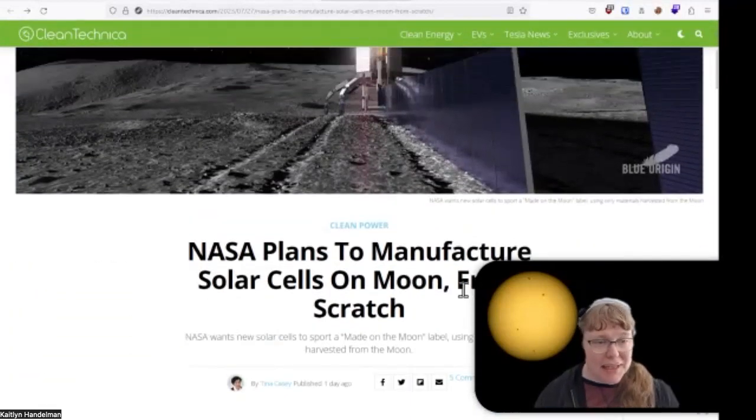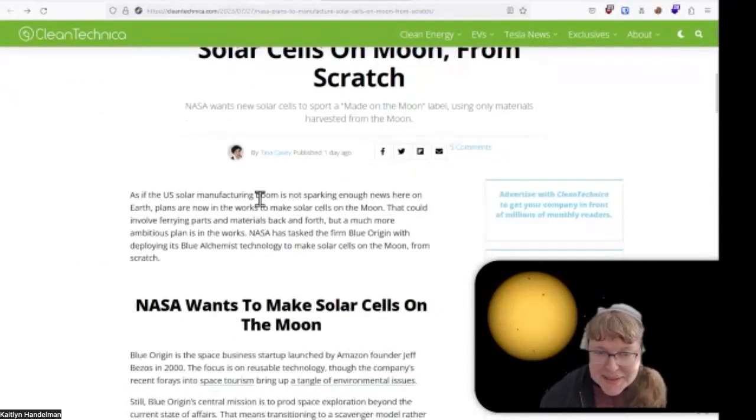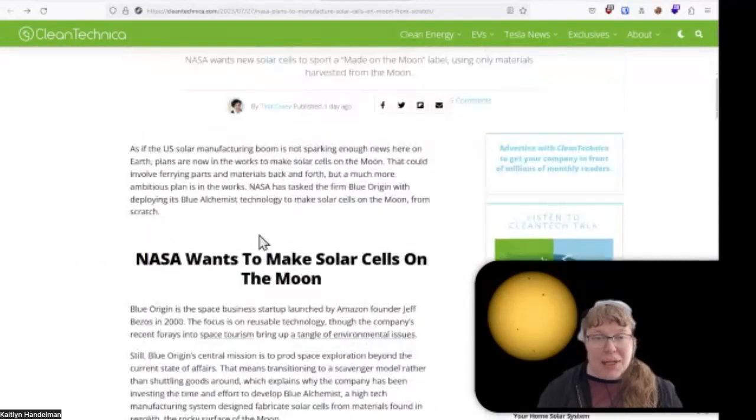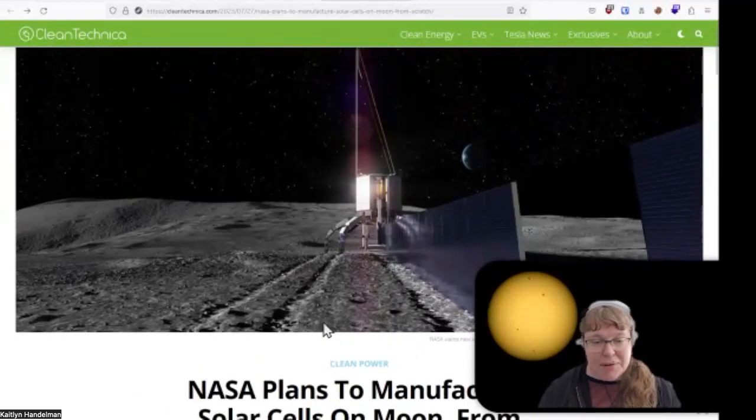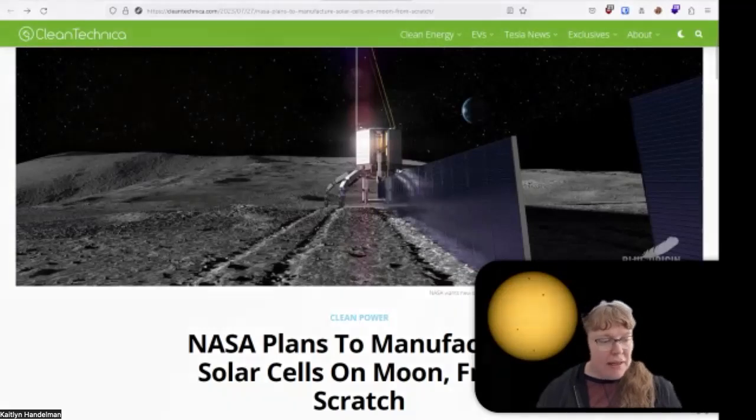And so this is from clean technica, by Tina Casey and blue origin is working on essentially melting down regolith on the moon. So regolith is the rocks, the dirt on the moon. Yep. Essentially melting it down. And you get a few things out of the regolith you get iron, you get aluminum and you get Silicon.